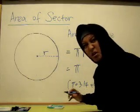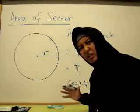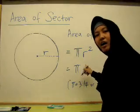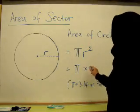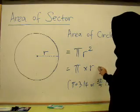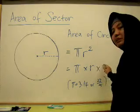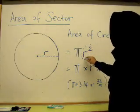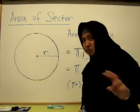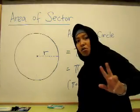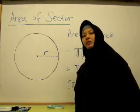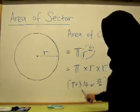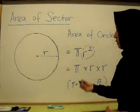I'll just repeat that because many of us tend to forget. So pi R squared is pi times R times R. R squared means R times R — not R times 2. R times R. So, pi times R times R.